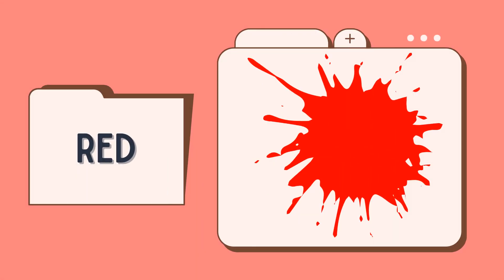The next colour is red. Red. Can you say red? Very good. Now let's spell: R, E, D — red.